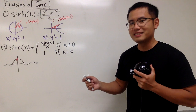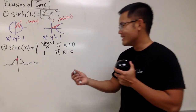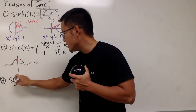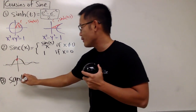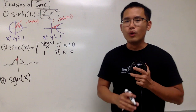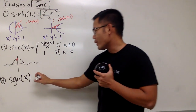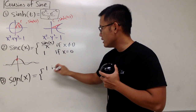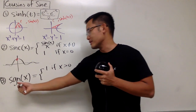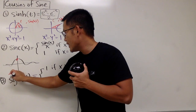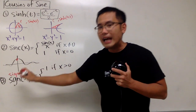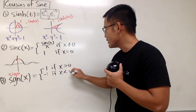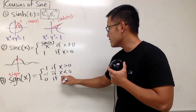Now let's talk about the sign function, written S-G-N, namely the signum of x. This is defined piecewise: it equals 1 if x is positive, negative 1 if x is less than 0, and 0 if x is equal to 0.